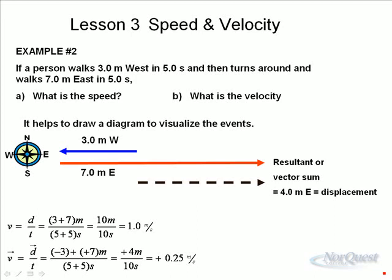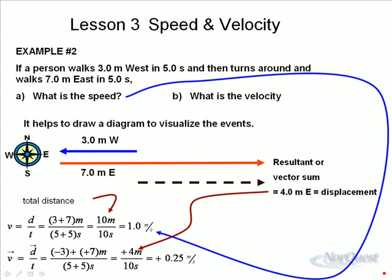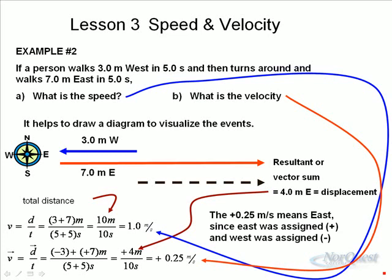Generally, we make east and north positive, south and west are negative, but you don't have to do that. It's just sort of a conventional approach. However, negative three plus positive seven gives you positive four, the positive being east means we went a total of four meters east in ten seconds, giving us a velocity of positive zero point two five meters per second, or in other words, zero point two five meters per second east. To find the speed, we take distance over time. To find the velocity, we take displacement over time. And of course, the zero point two five positive means east because we arbitrarily assigned east as a positive and west as a negative.